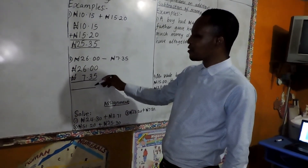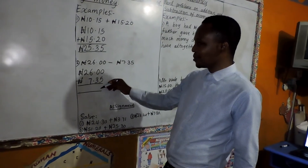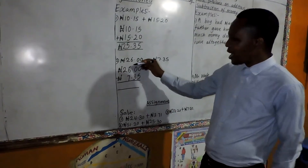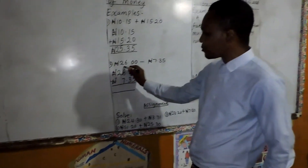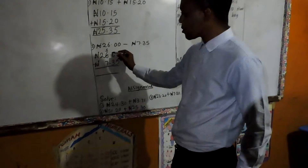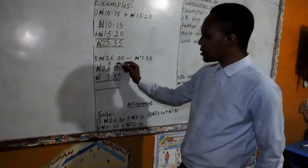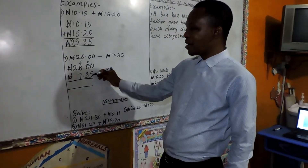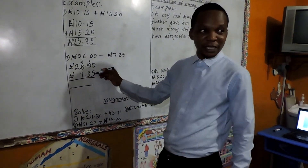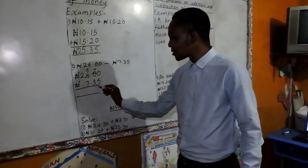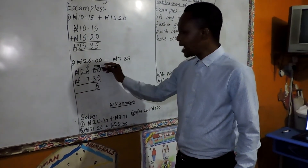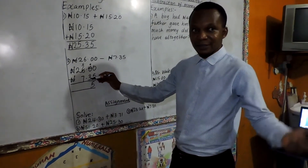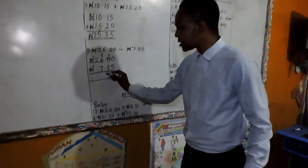Alright. 0 minus 5 — is that possible? It's not possible. Okay, borrow from here. I'm having 0 here again, so I have to move forward and borrow from here. This one will become 5, and this becomes 10. From this 10, you borrow 1 to become 9. And this 10. Now, 10 minus 5 will give us what? 5. Good. 9 minus 3 — what would that give us? That gives us 6. Good.